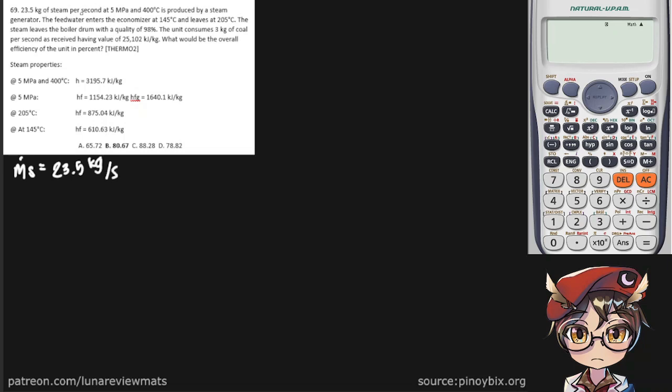And the properties for that steam is down here. The feed water enters the economizer at 145°C and leaves at 205°C. Properties for those are here.